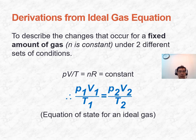Combining Boyle's Law, Charles' Law, and Avogadro's Law gives the ideal gas equation in the form P₁V₁/T₁ = P₂V₂/T₂. This holds when comparing the same number of moles of gases.